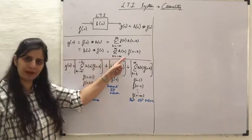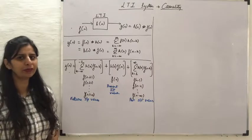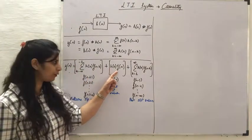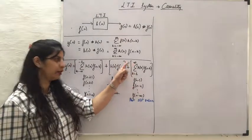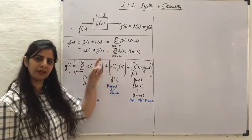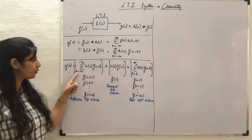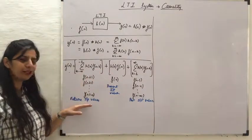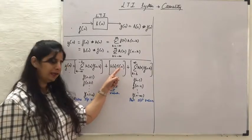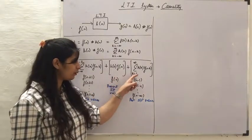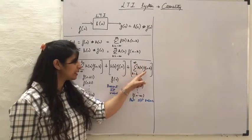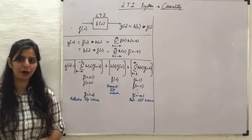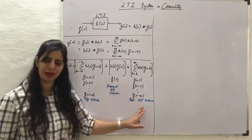I am taking Y(N) equal to this summation and spreading out the limits into three parts: K from minus infinity to minus 1, the value at K equals 0, and K from 1 to infinity. When K takes negative values in F(N minus K), those represent future values of the input. K equals 0 represents the present value, and K from 1 to infinity represents the past values of the input.